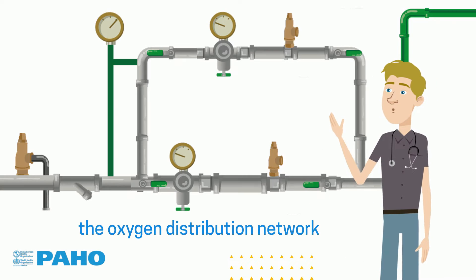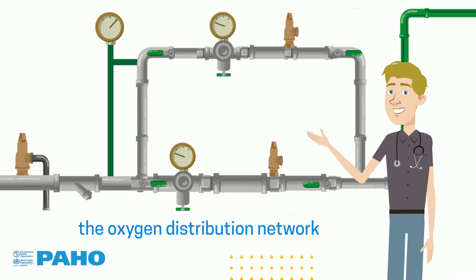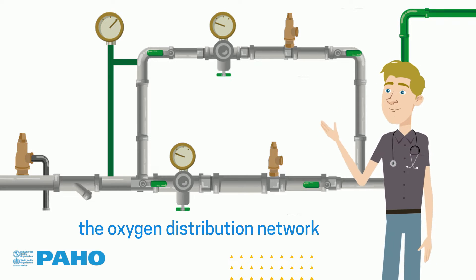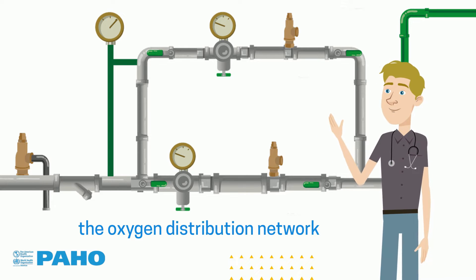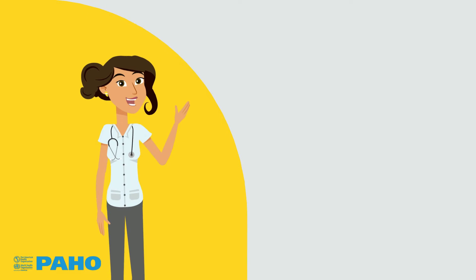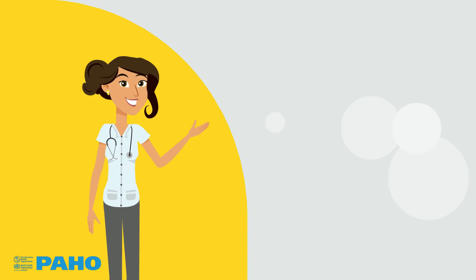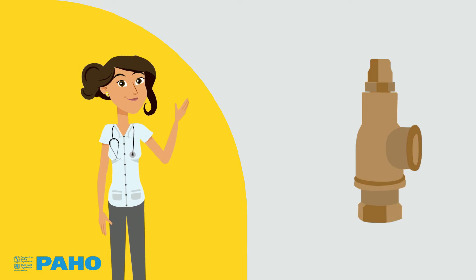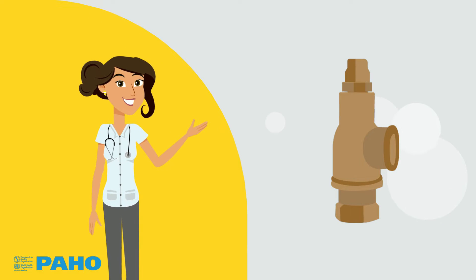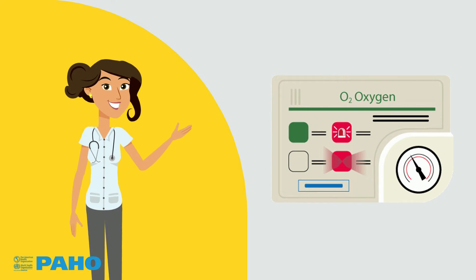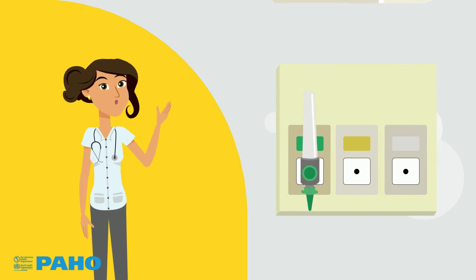The oxygen distribution network begins immediately after the oxygen pressure is reduced to a level compatible with the requirements of the medical equipment that will be connected to it. This network contains a number of elements, the main ones being safety or pressure relief valves, opening and closing valves, alarms, and stations or consumption points.